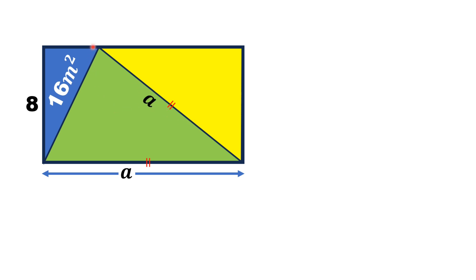Let's call the base of the blue triangle B. This whole length is A, this length is B, which means this length is A minus B.